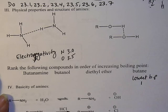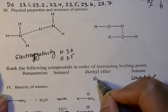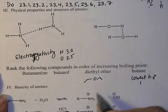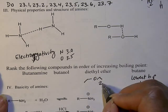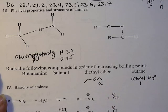So butane doesn't have any functional groups. So that's going to be the lowest boiling point. All right. All right. So we'll give that one. Then the diethyl ether, which looks like this, doesn't have hydrogen bonding. It just has dipole-dipole. So that's going to be the next in boiling point.